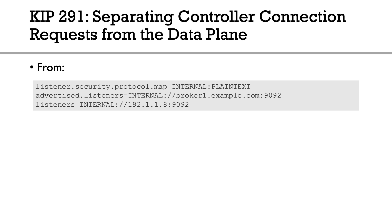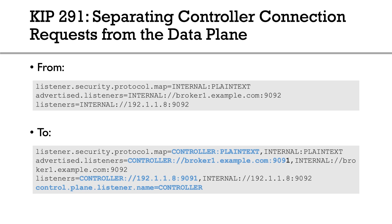What does it look like in the config changes? Before, we had advertised listeners set to internal port 9092, and in the listener security protocol map we mapped the internal protocol to plain text. Now, in the advertised listeners we add a controller endpoint on port 9091. In the listener security protocol map we say controller is also plain text. And there's a new setting — control.plane.listener.name equals controller — basically indicating to Kafka that all controller requests should go through port 9091. There are a few steps to smoothly upgrade to separating your controller requests from your data plane requests.